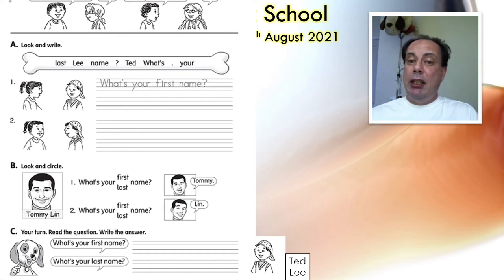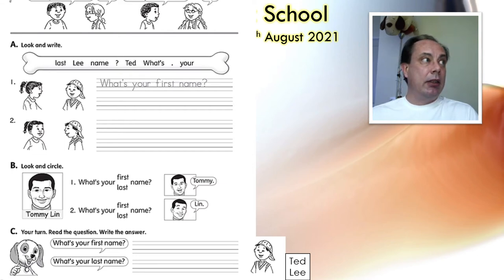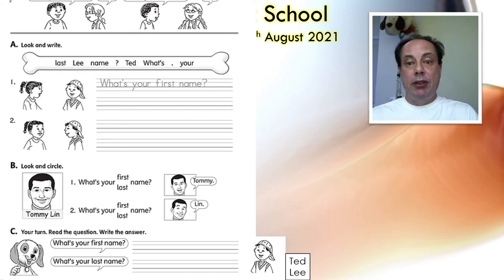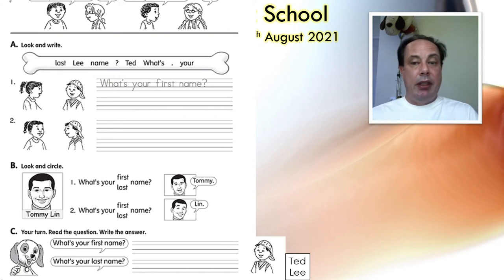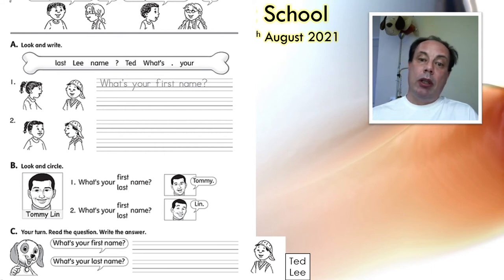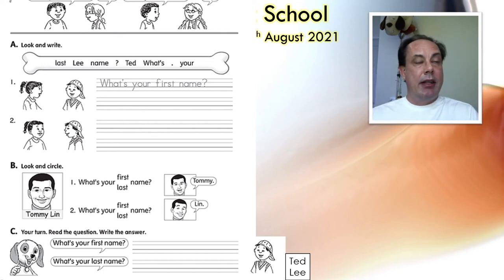Exercise B is look and circle — you have to circle first or last. Number one is: what's your first name? So you circle first, and the answer is Tommy. Number two is: what's your last name? Please circle last, and the answer is Lynn.